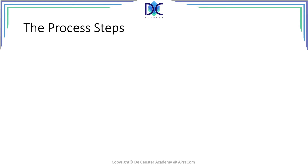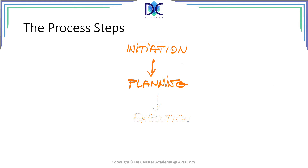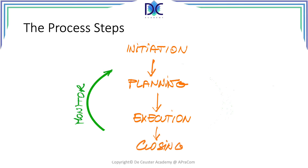First of all, the process steps. We've been talking about this before, but as I told you, it's very important in project management to understand this properly. First we have the step of initiation, where we are starting with a project. Then we have planning. The next step is project execution and then we have project closing. Of course we also have monitor and control process steps, which are very important in project management.